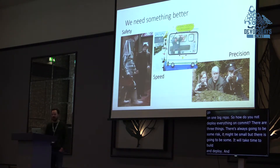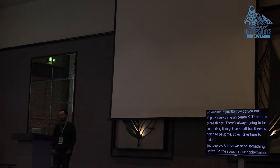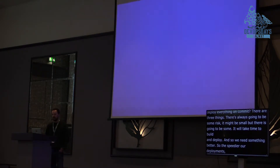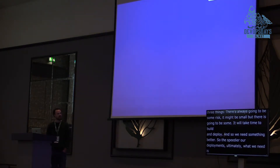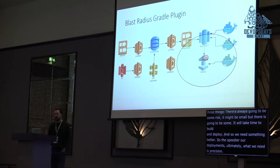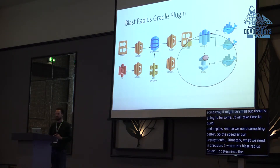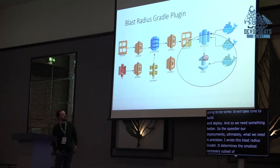The safer we are, the less afraid of deployments we'll be. The speedier our deployments, the more of them we can do, and ultimately what we need is precision. So I wrote this Gradle plugin called Blast Radius, and on any given build of your pipeline, it determines the smallest necessary subset of modules you need to deploy. That's the green circle here — that's your Blast Radius.